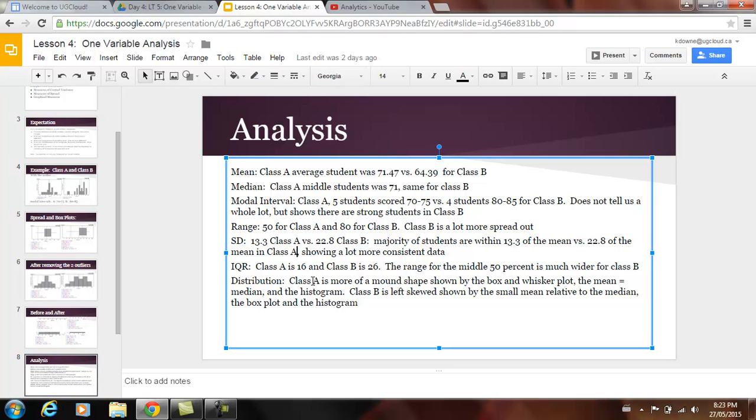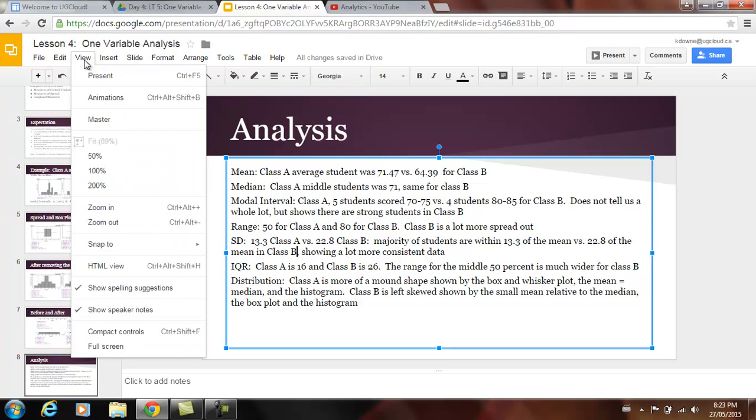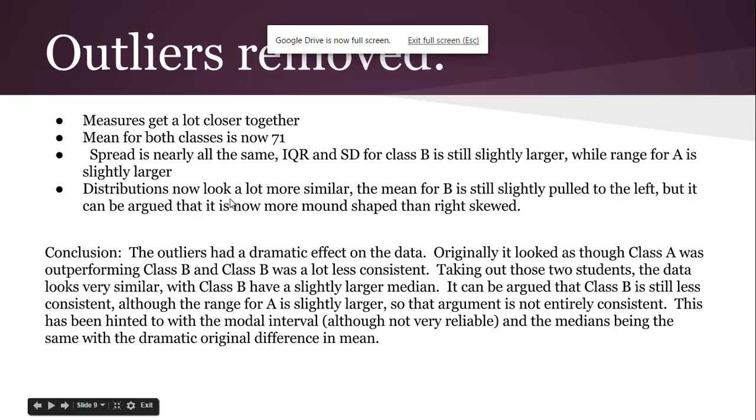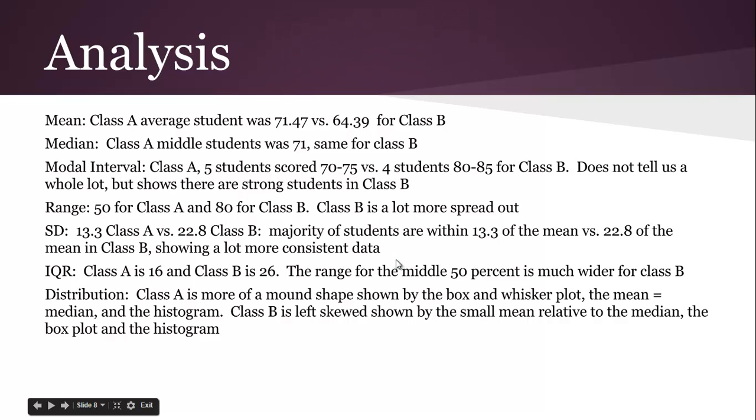It's a lot more consistent in class A, because it's lower. IQR in class A is 16, class B is 26. The range for the middle 50 percent is much wider for class B. The IQR is a better measure, because it doesn't take into account those outliers. So class A is a lot more consistent than class B. If we just want to take them out, that doesn't change the fact that really, they should be there. But if they don't carry as much value, then class A is still a lot more consistent.